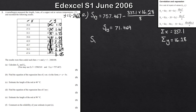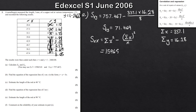Now for S_xx, the formula is the sum of x squared minus the sum of x all squared, divided by n. The sum of x squared is given as 15,965.01. The sum of x is 337.1 squared divided by 8. Plugging this into the calculator gives S_xx equals 1,760.459.